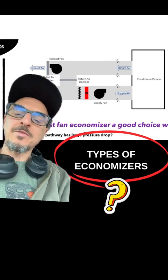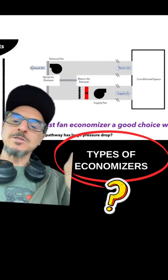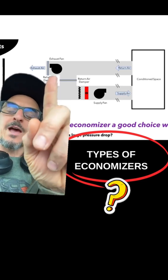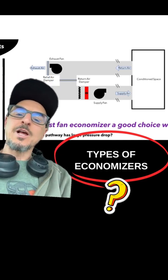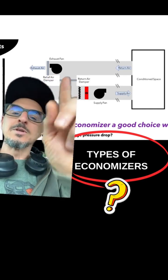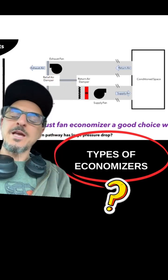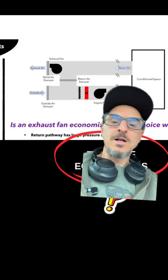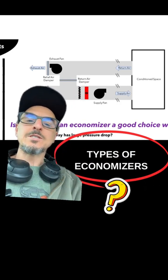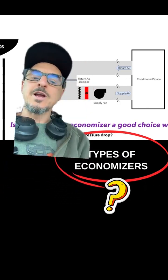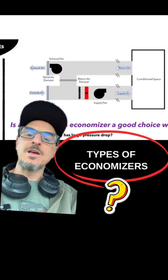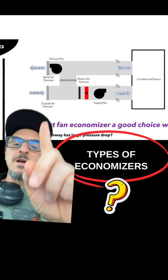The next type is an exhaust fan economizer, where you actually have an exhaust fan. During economizer mode, you turn this fan on, which helps to relieve the pressure of the space. This works well if you have under one inch of static in the return air duct — so one inch of static. This is very common in a VAV system.